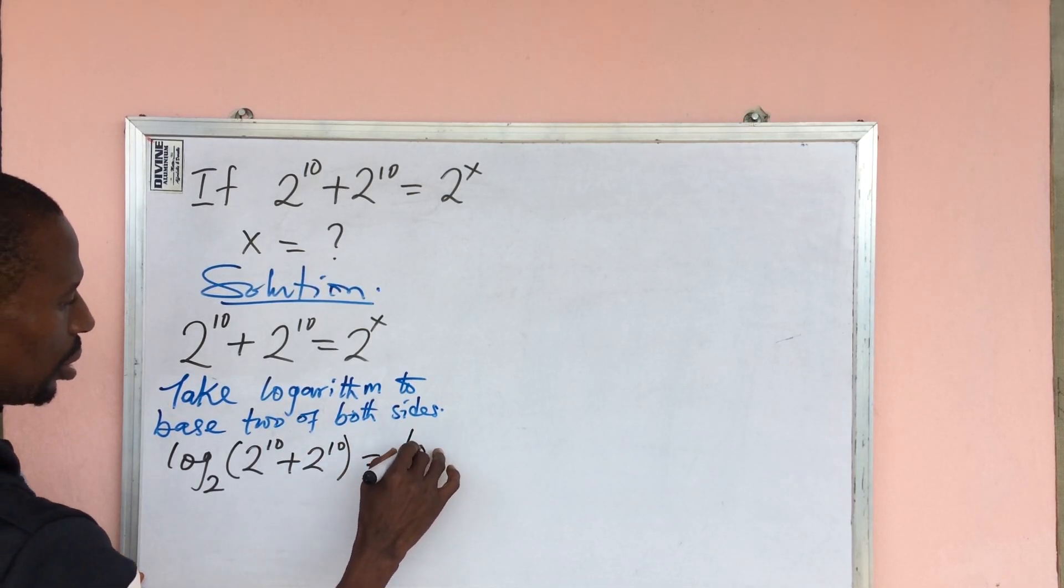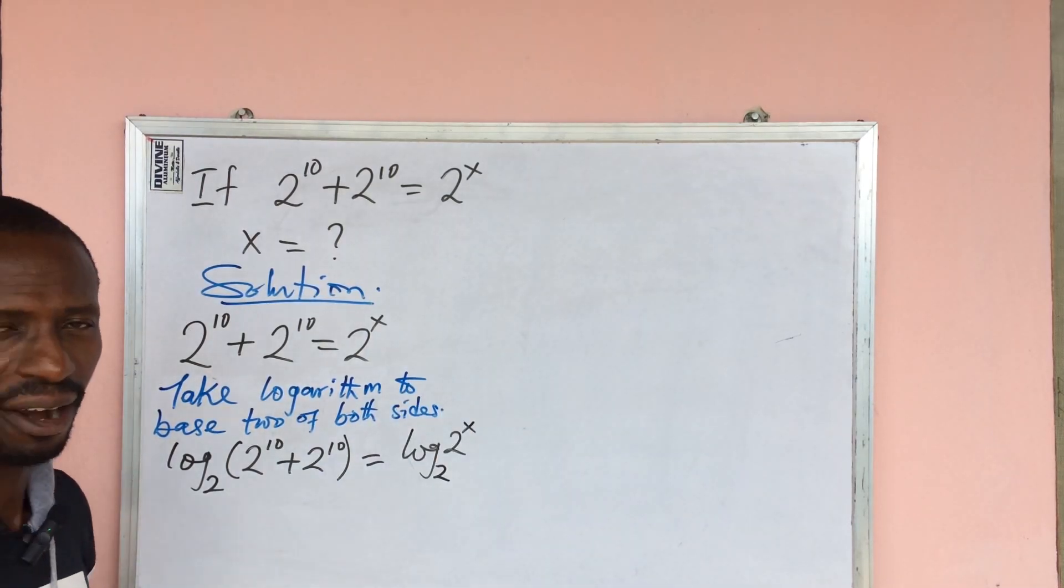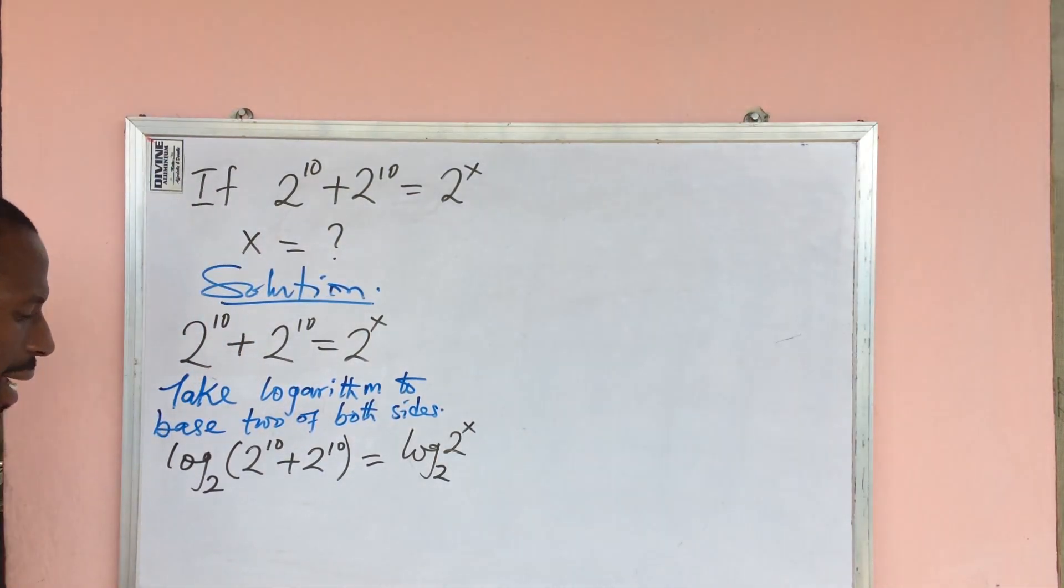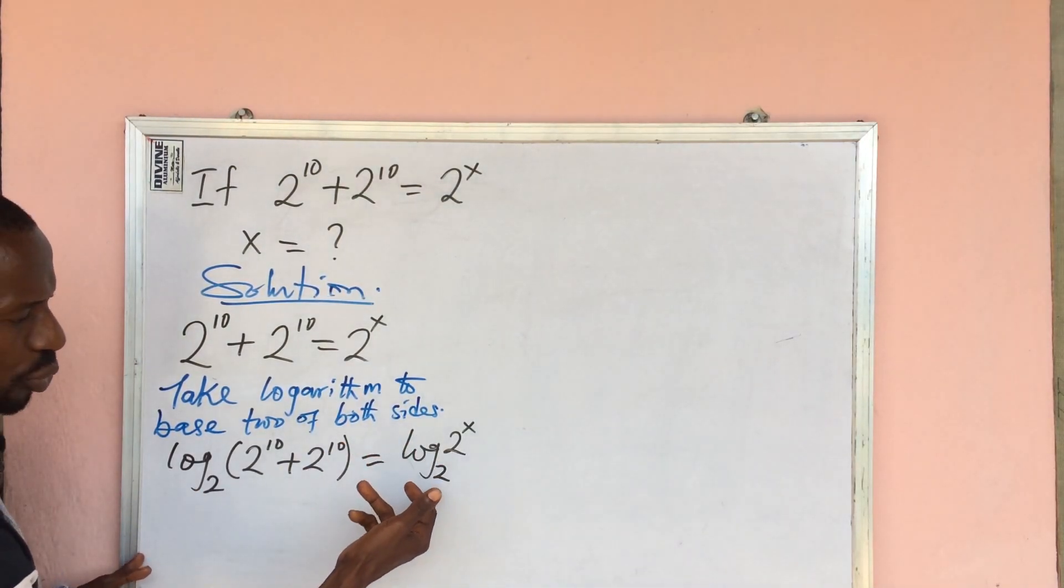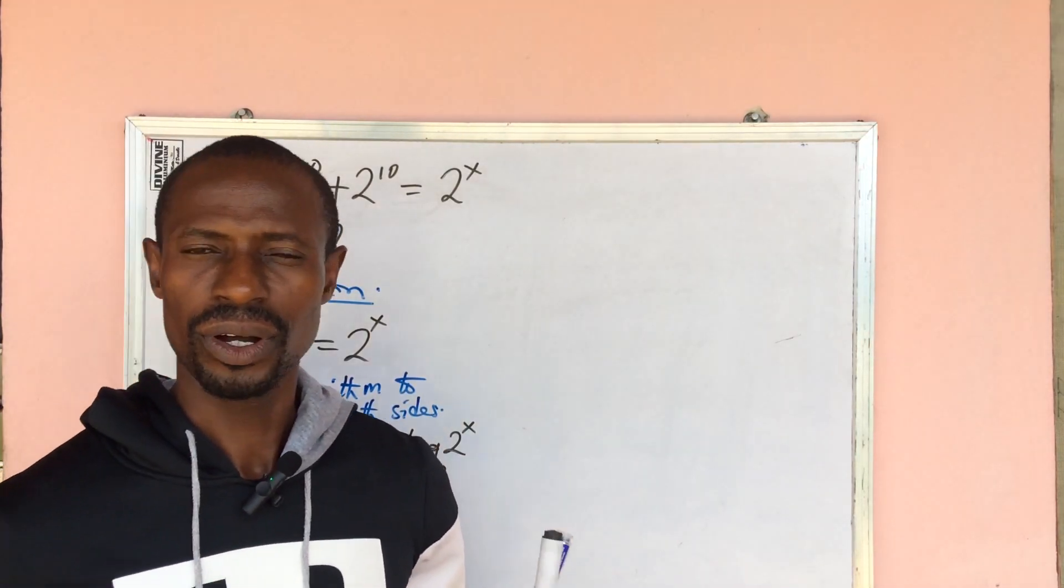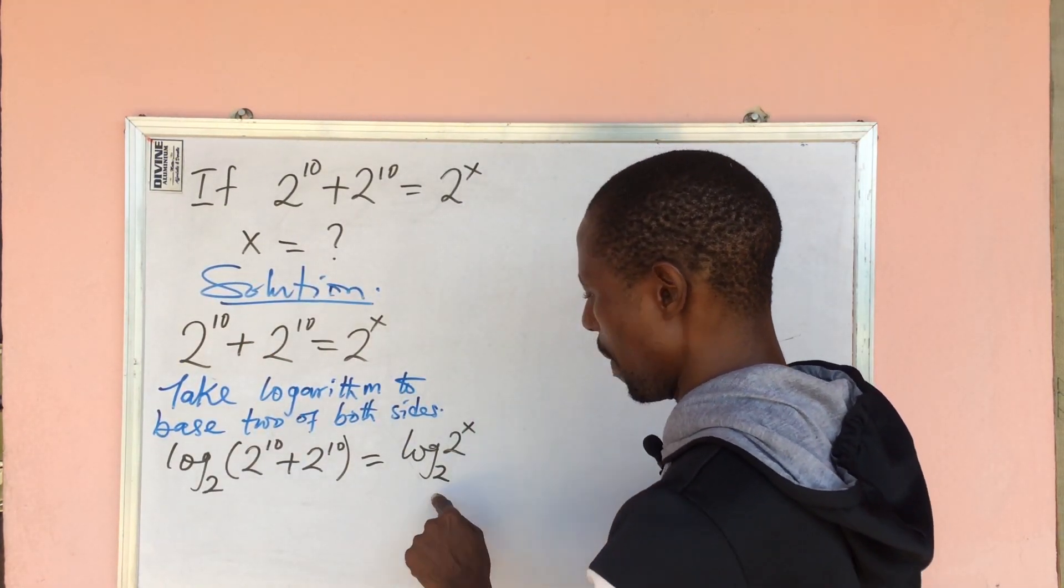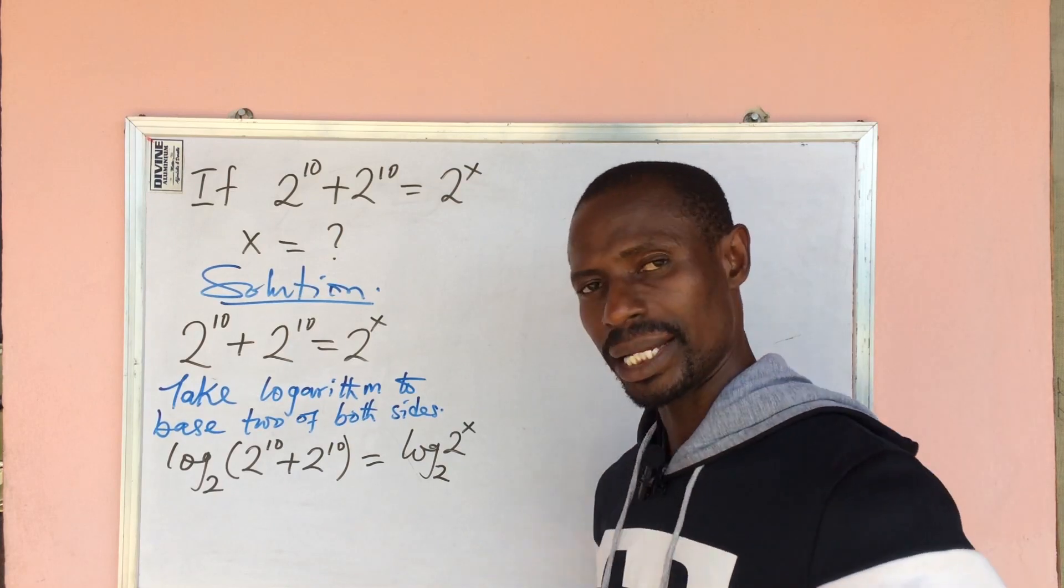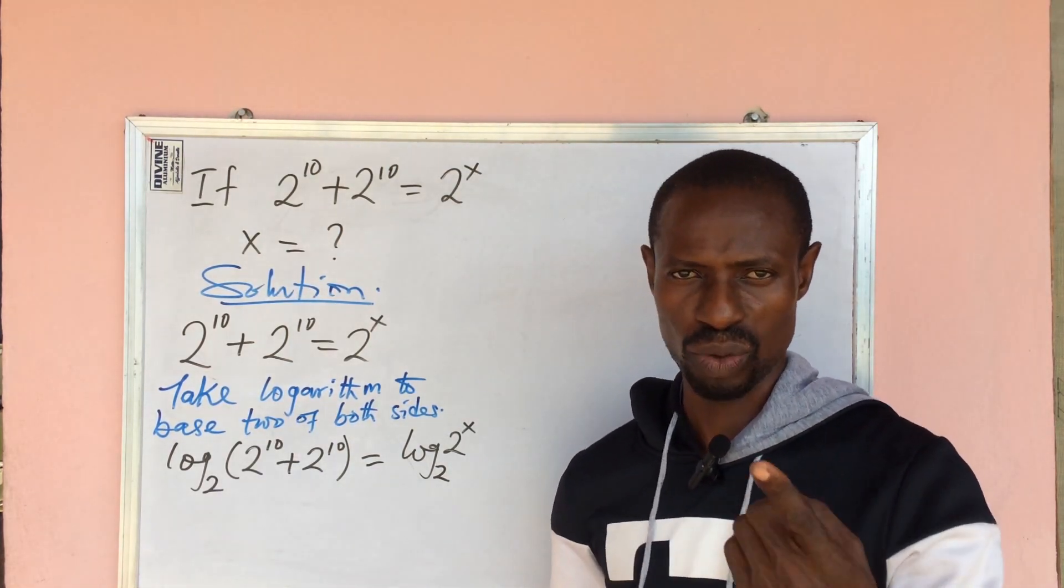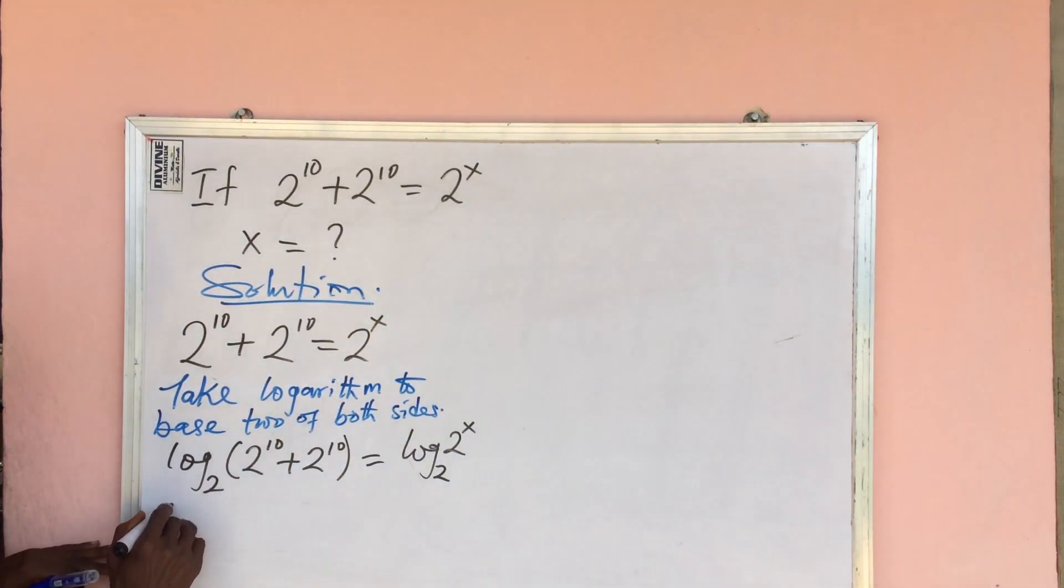Here we are having log 2 to the power of x base 2, so we can bring the power back according to the power law of logarithms. If we bring the power back, we are going to be left here with log 2 base 2, and the log of any number base itself is 1, so automatically here we get x.